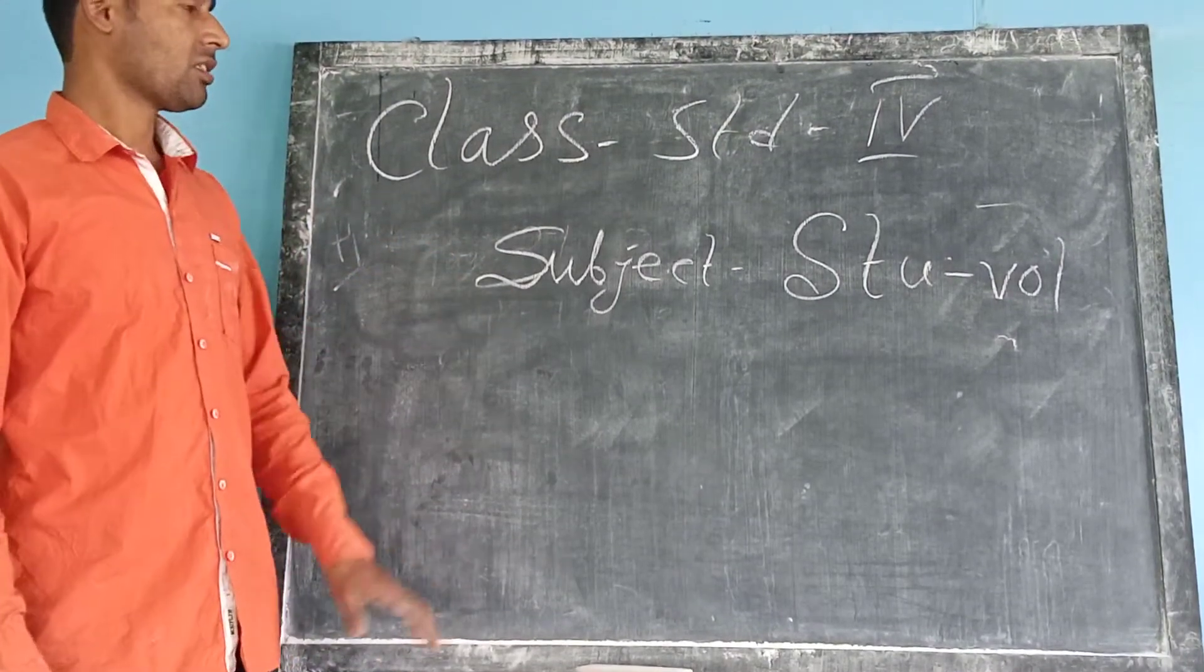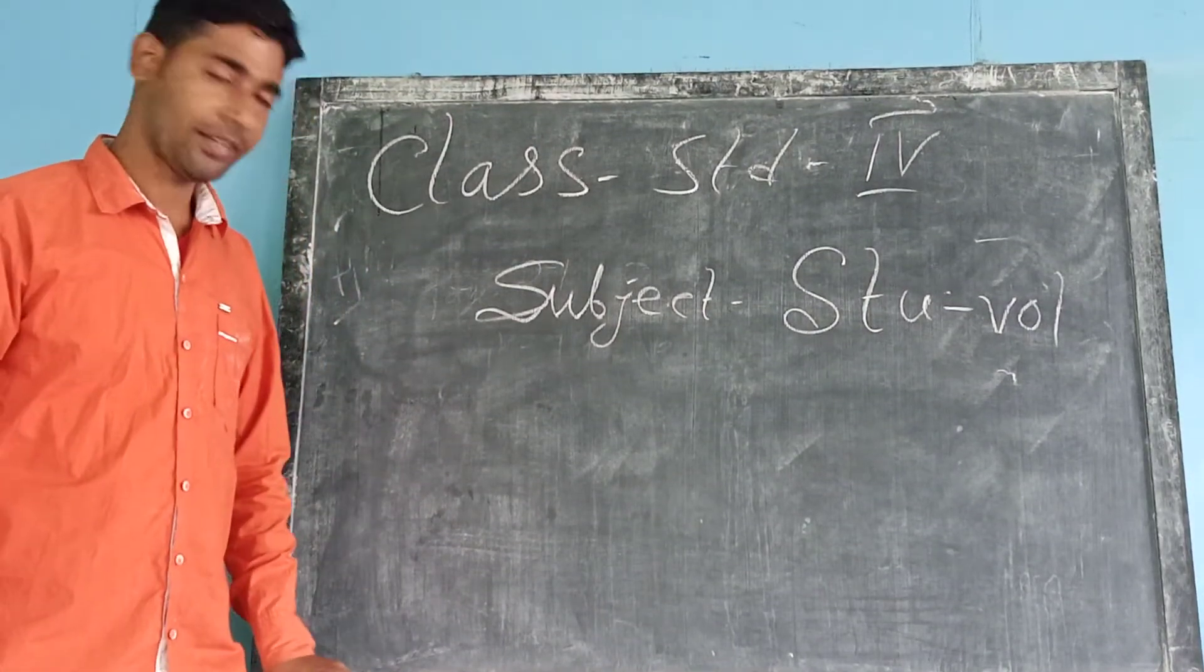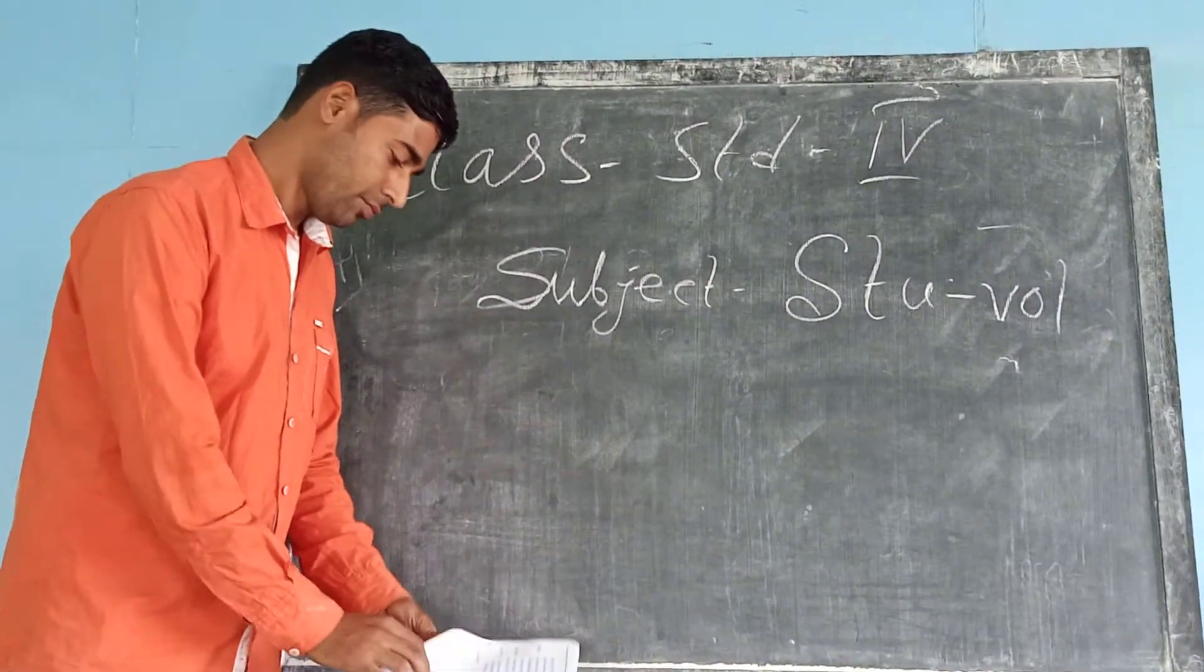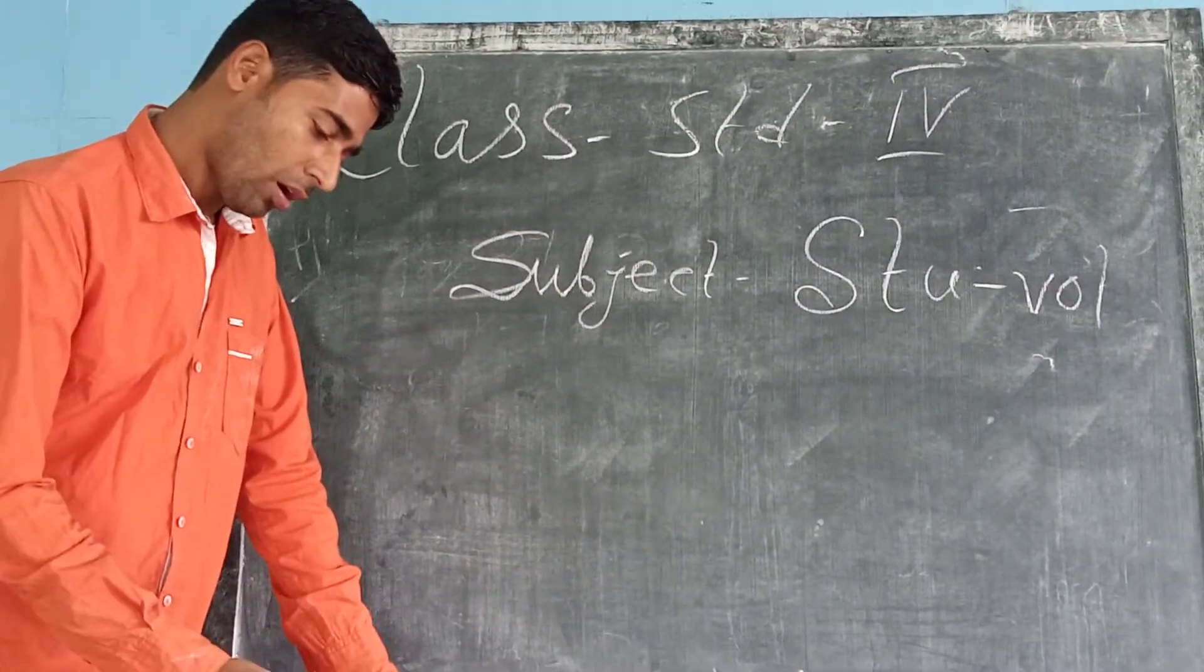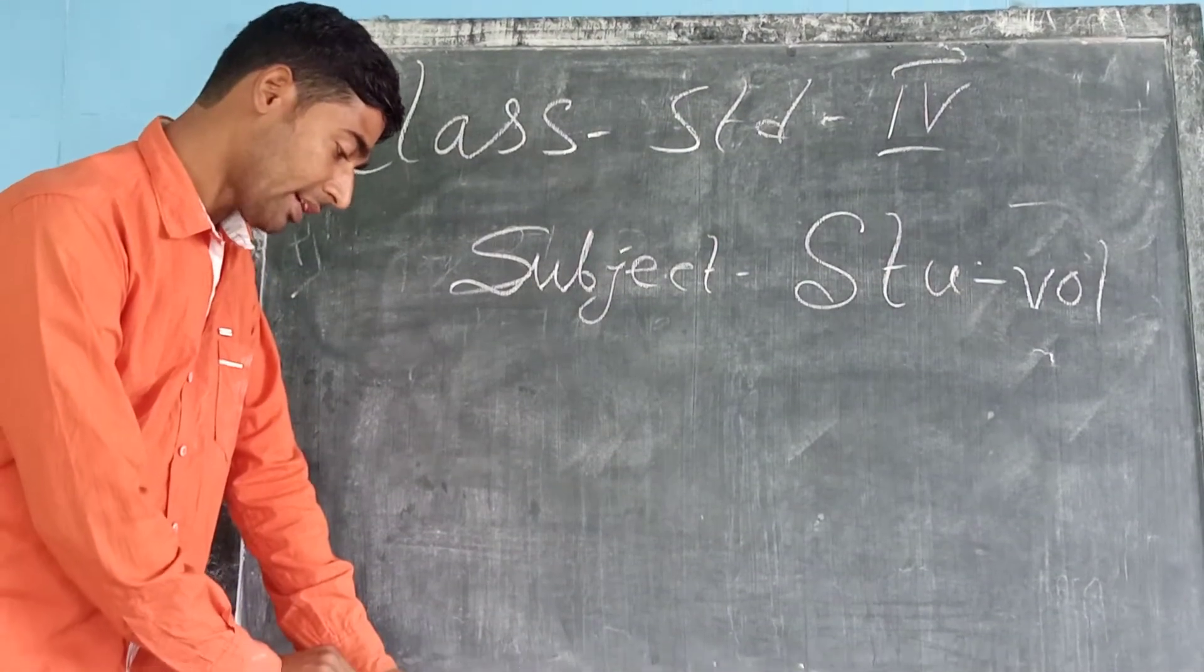This is a student class, Class 4. Everyone take out your student book, page number 34. Today we will discuss public places, their properties and characteristics. Next is the market, and bus stop.